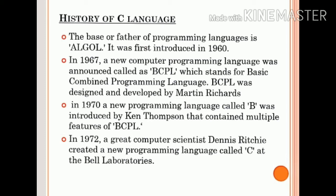In 1972, a great computer scientist Dennis Ritchie created a new programming language called C at the Bell Laboratories. The impact of BCPL on C is observed indirectly through the language B.